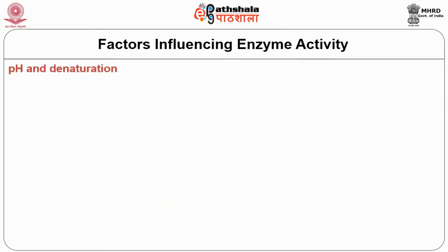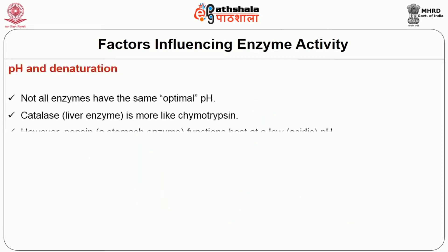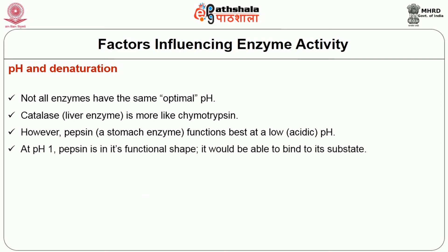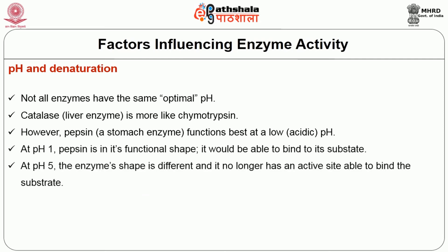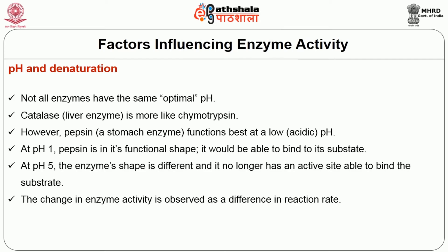What happens at the extremes of pH, other than the optimum pH? There is denaturation of the enzyme, leading to distortion in its shape, so it is no longer a perfect fit for the substrate to bind and for the enzyme to exhibit its reaction kinetics.